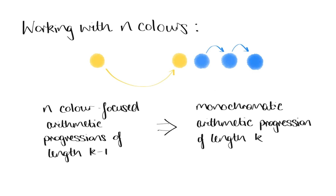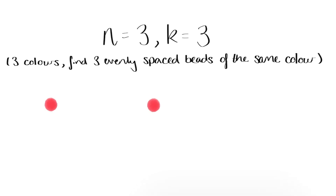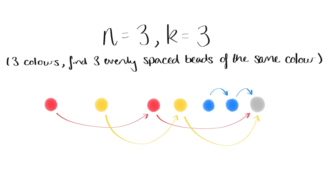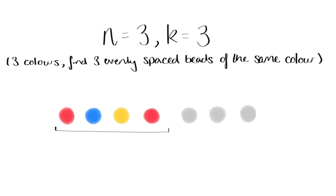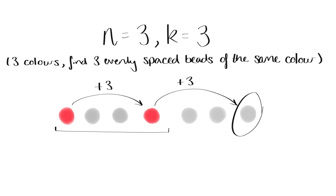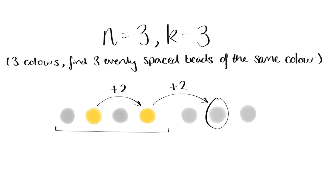The idea of colour-focusing can be used to prove the full theorem, but this needs a lot of steps, so we won't go through it here. Instead, to illustrate the idea in action, let's prove van der Waerden's theorem in the case n equals 3, k equals 3. In other words, we'll show that there exists some number w, such that whenever you have at least w beads on a string in three different colours, then there are always three evenly spaced beads of the same colour. And we'll do this by finding three colour-focused progressions of length 2. Start off by considering seven beads. Of the first four beads, there must be two that are the same colour, and we can treat these as an arithmetic progression of length 2, and follow along to find the third term of the progression. However these first four beads are arranged, the third term will always be no further along than the seventh bead.